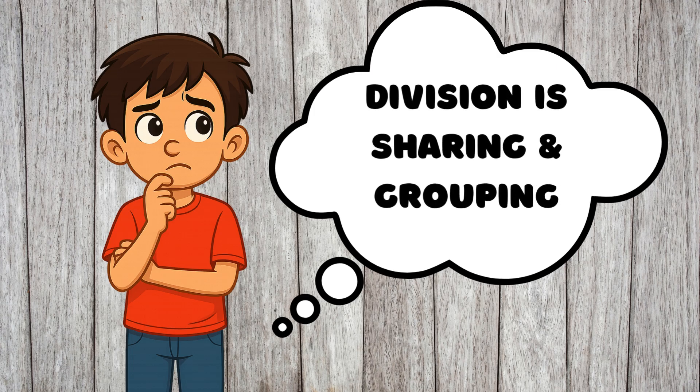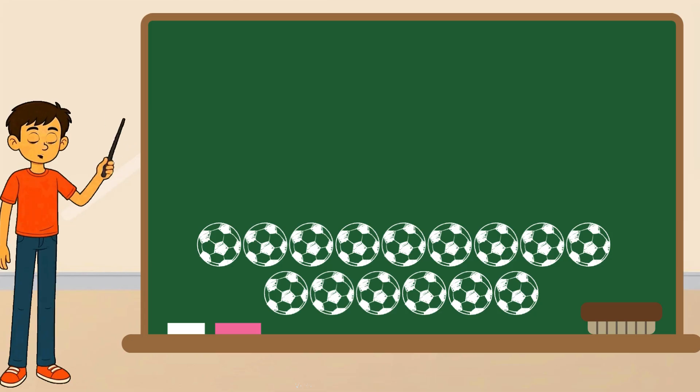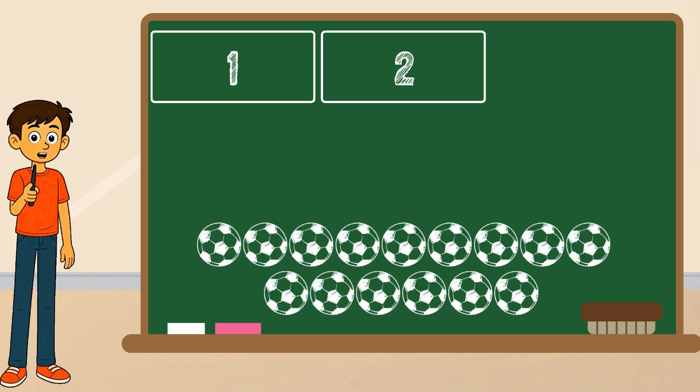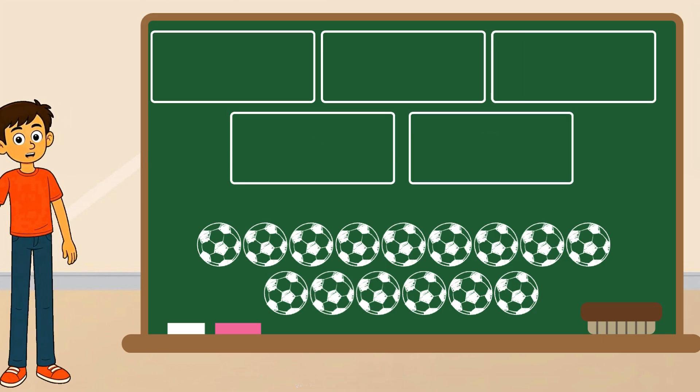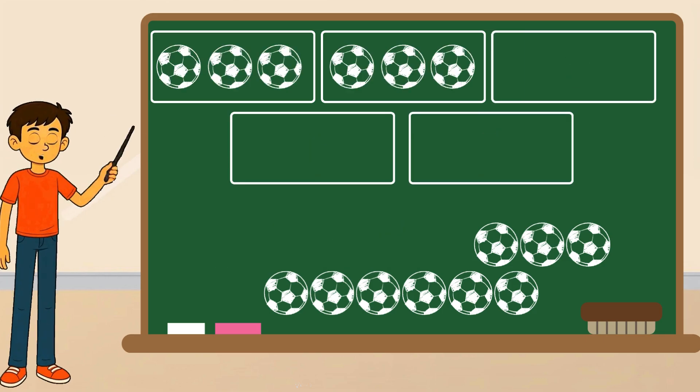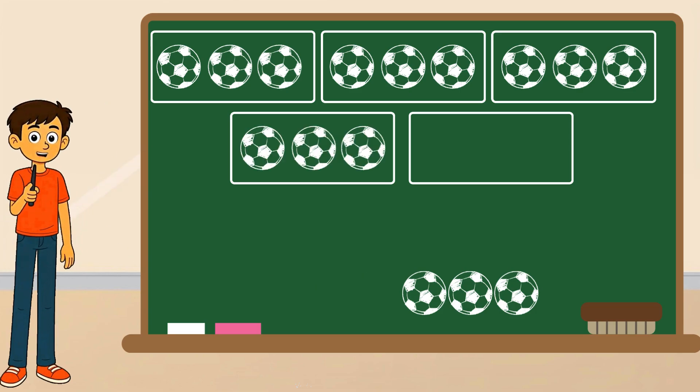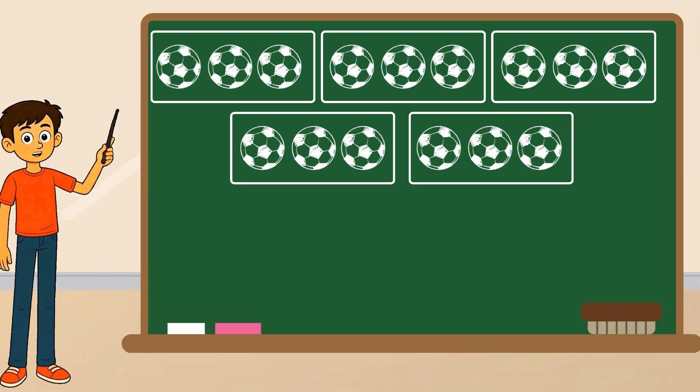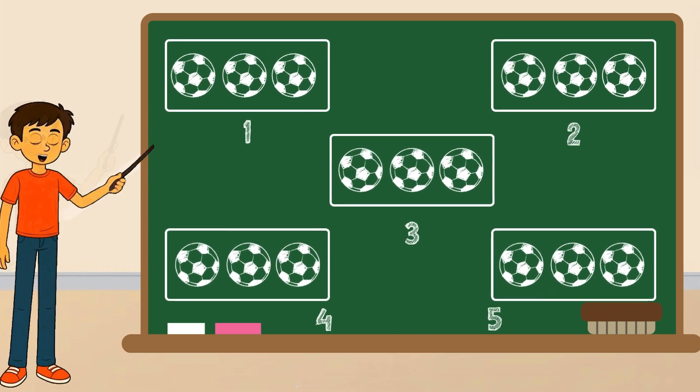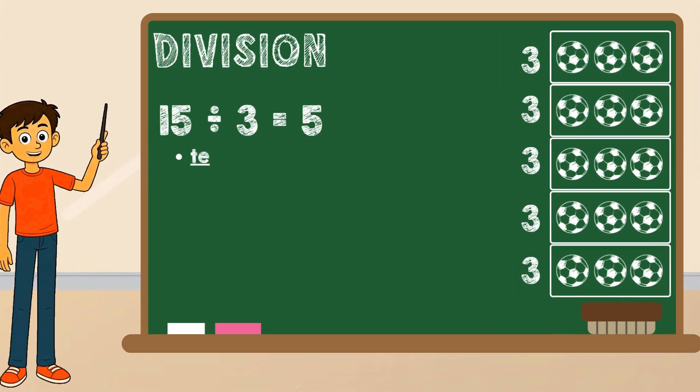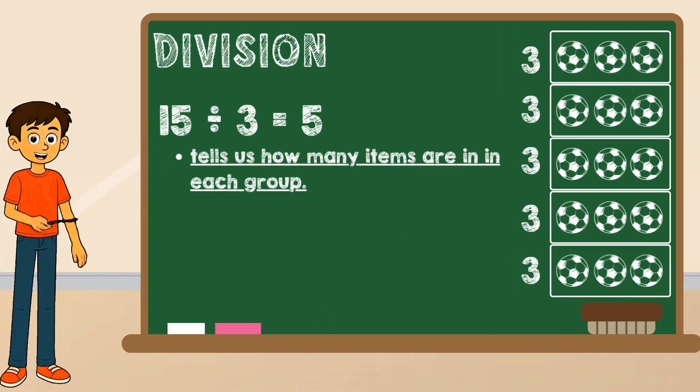Division doesn't just mean sharing. It can also mean grouping. Imagine you have fifteen soccer balls and you want to make groups of three. You start grouping. Three in the first group, three in the second, three in the third, three in the fourth, three in the fifth. You made five groups, so fifteen divided by three equals five. Division can tell us how many are in each group or how many groups we can make.